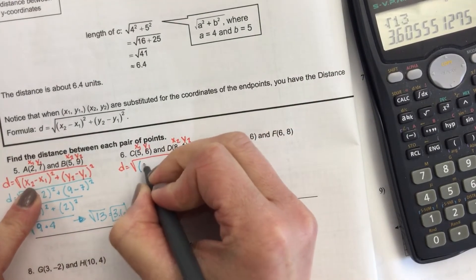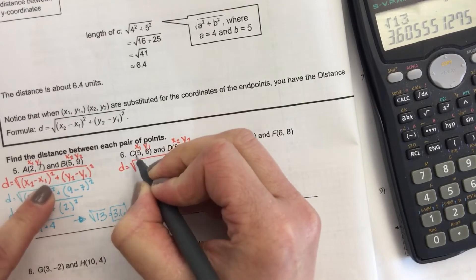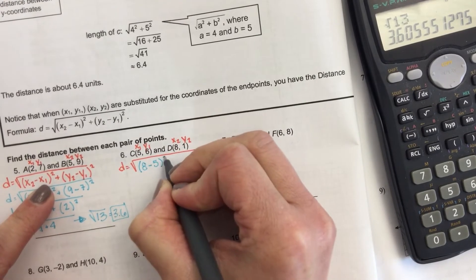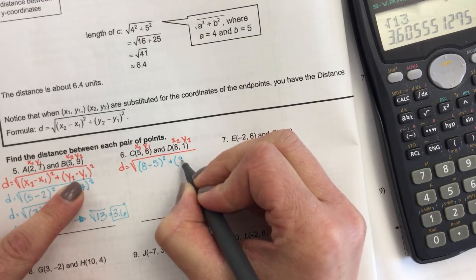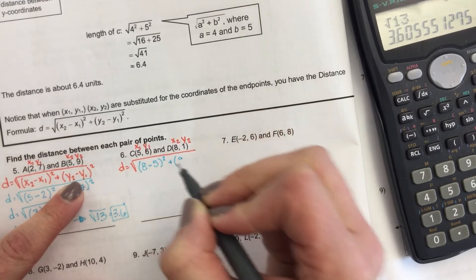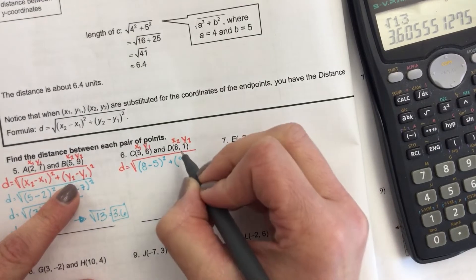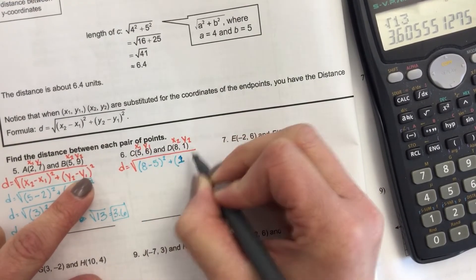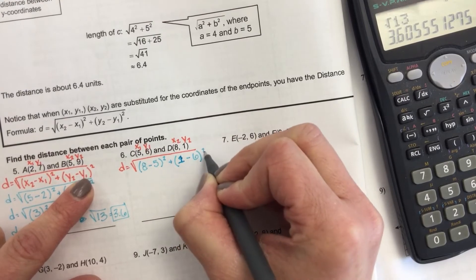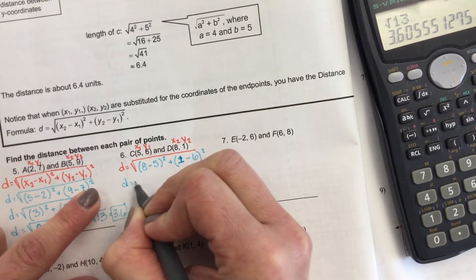So x2 is 8, x1 is 5. y2 is 8. Oh, shoot. y2 is 1. See, it's easy to get confused.